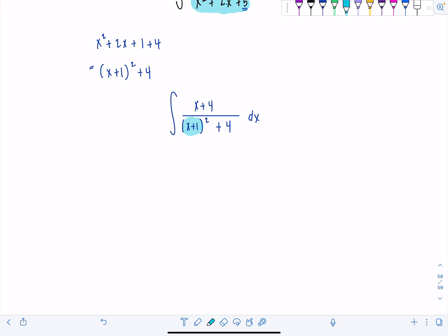So instead of x plus 4 in the numerator, I wish that I had x plus 1 as well. So I'm going to make it happen. I'm going to rewrite this again as x plus 1 plus 3 because that's x plus 4. And then now I have x plus 1 quantity squared plus 4 dx. All right.